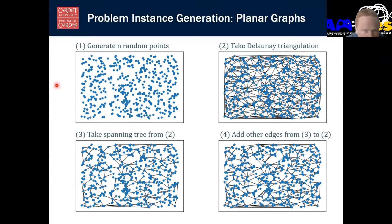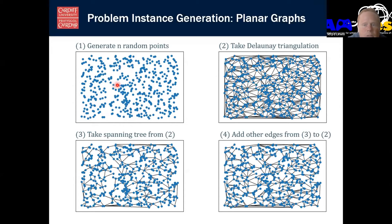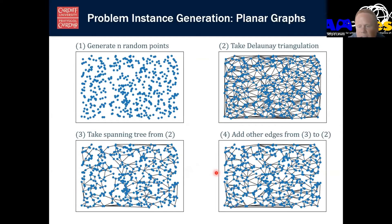I did do some work with real world maps, but I wanted to be able to control certain aspects of the problem instances. So I came up with a problem instance generator for generating planar graphs, which are supposed to approximate maps. A planar graph is just a graph that can be drawn so that none of the edges cross. You take a square, generate a whole bunch of points on it, create a Delaunay triangulation, then take a subset of the edges to form a spanning tree - giving a connected graph - and then add edges from step two to give a planar graph of the correct density.